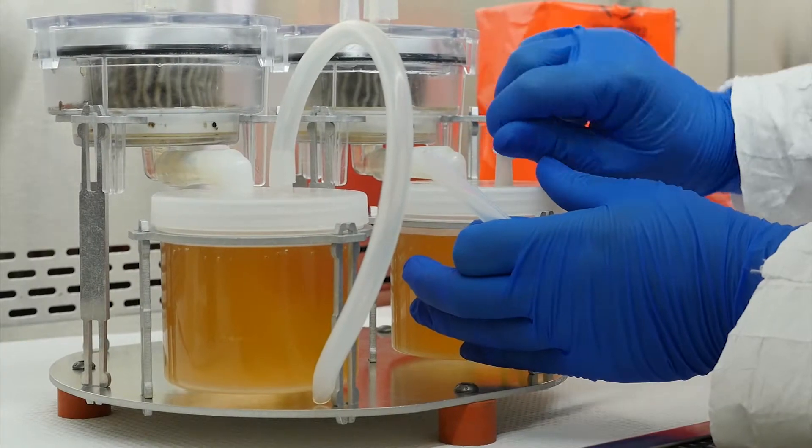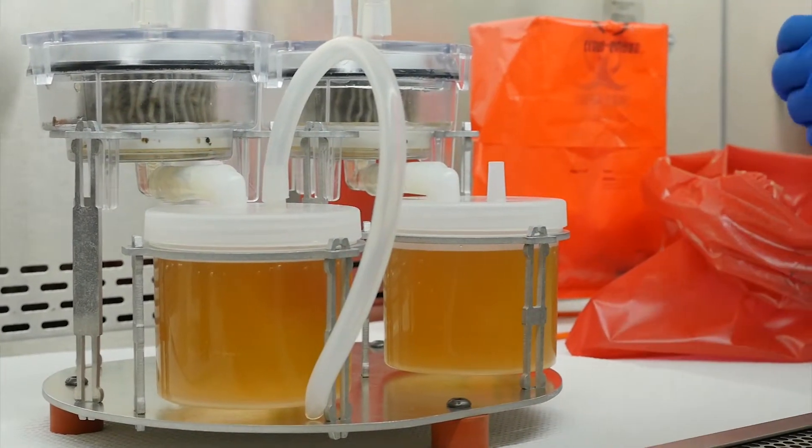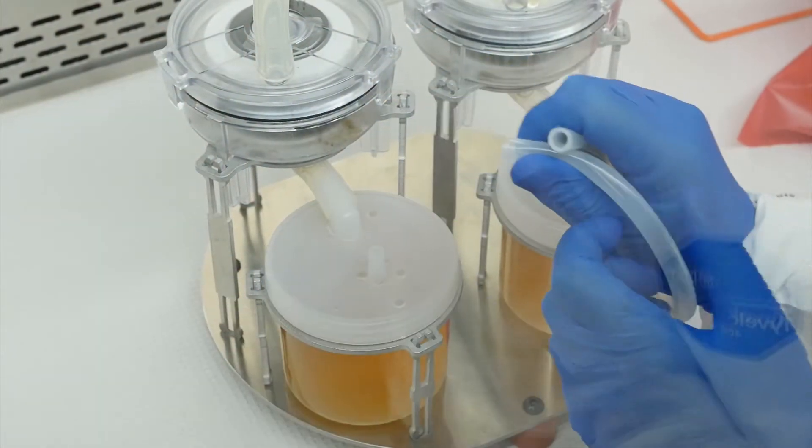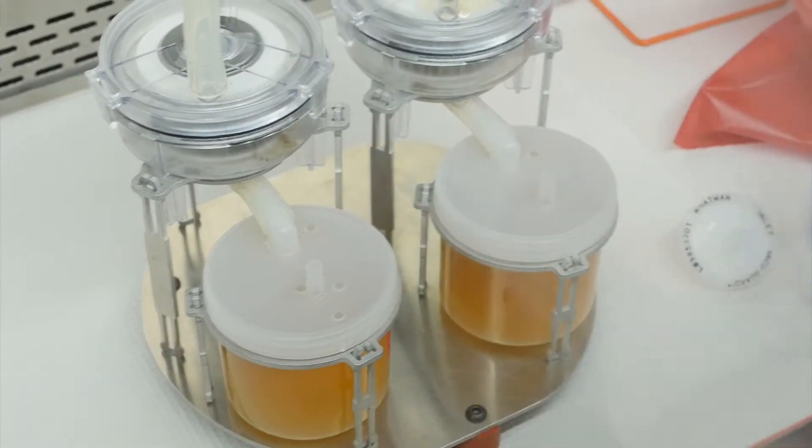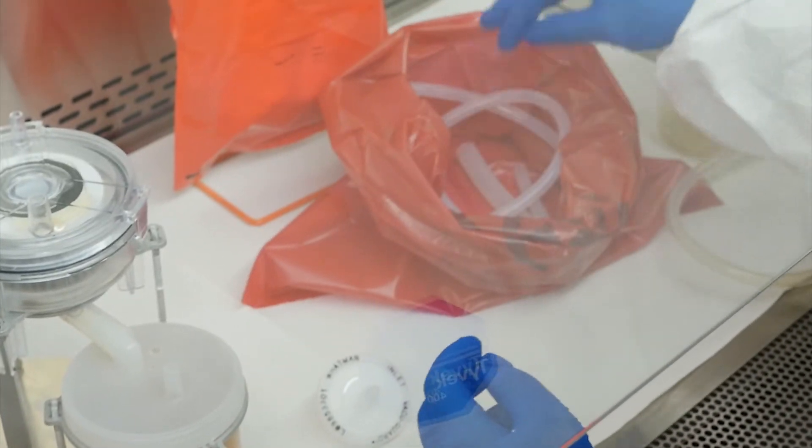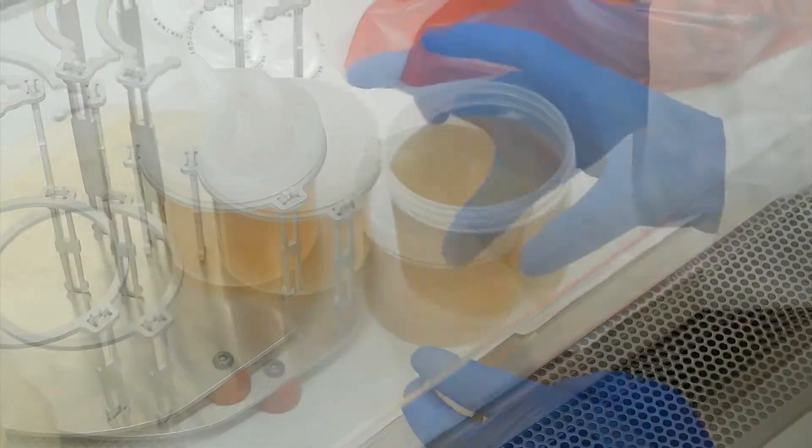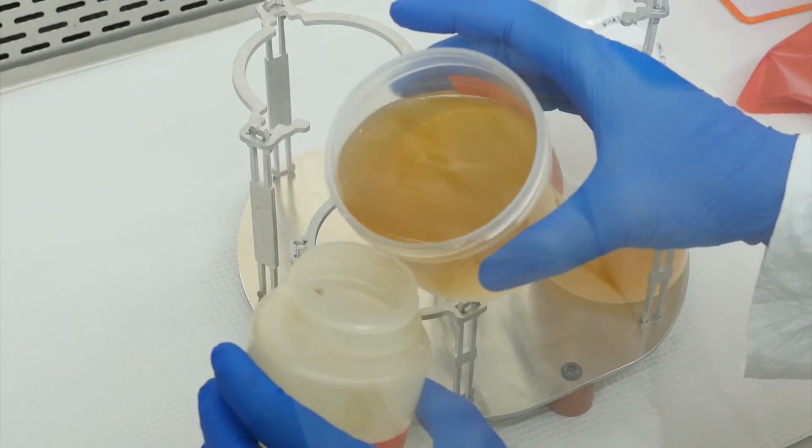After elution is complete, carefully detach all tubing from the ViroCap filter, collection cup, and bilge pump. Place the tubing in a bag to autoclave, then wash the tubing for reuse. Remove the collection cup lid and carefully pour the eluent into the labeled collection bottle.